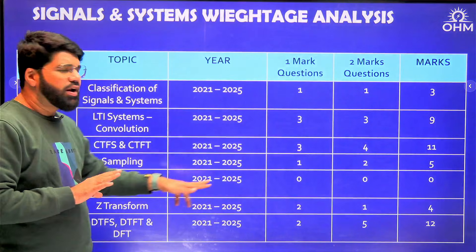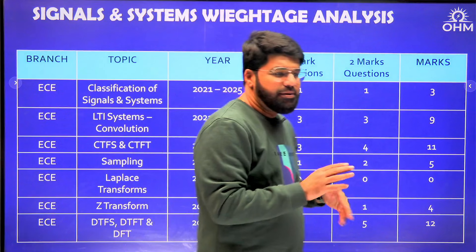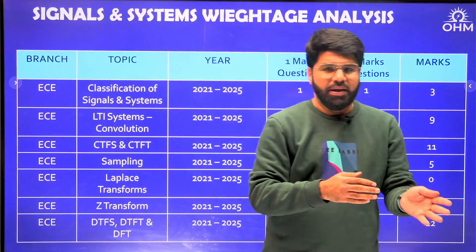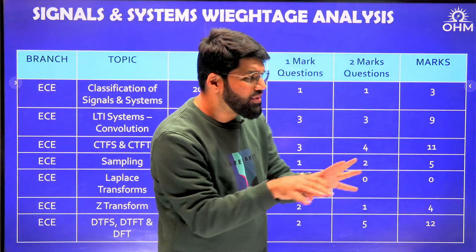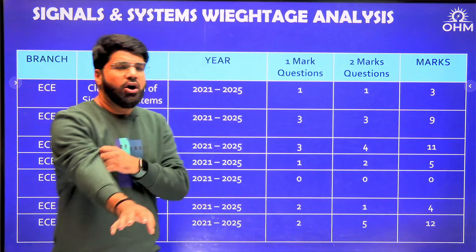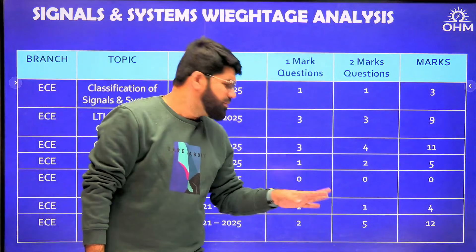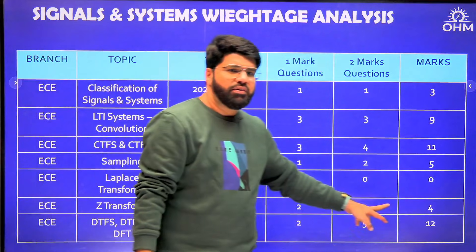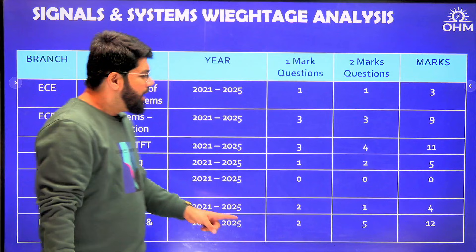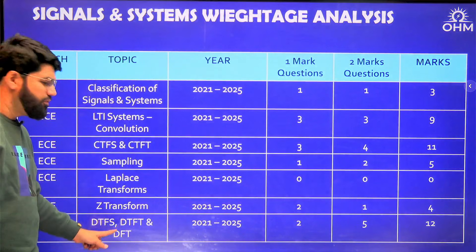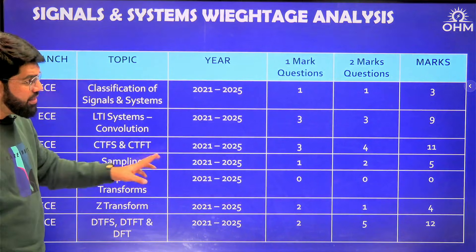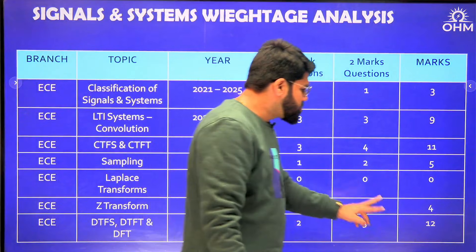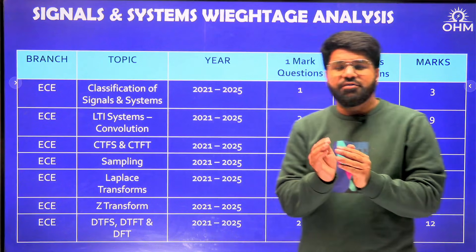Laplace transforms — directly, questions related to ROC or Laplace applied to LTI systems — has been zero for EC. Z-transform has two questions of one mark and one question of two marks, totaling four marks. DTFS, DTFT, and DFT — with DFT being actually important for EC — has two questions of one mark and five questions of two marks, totaling twelve marks.